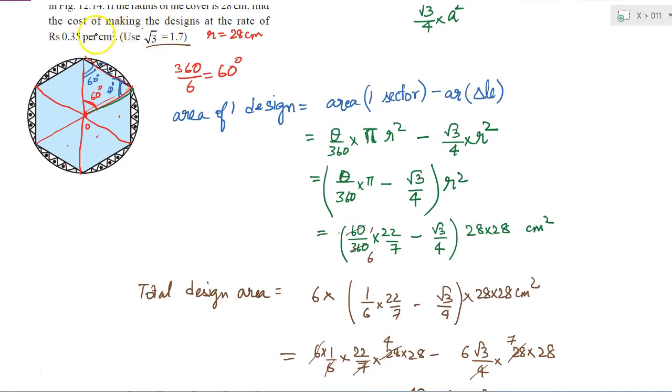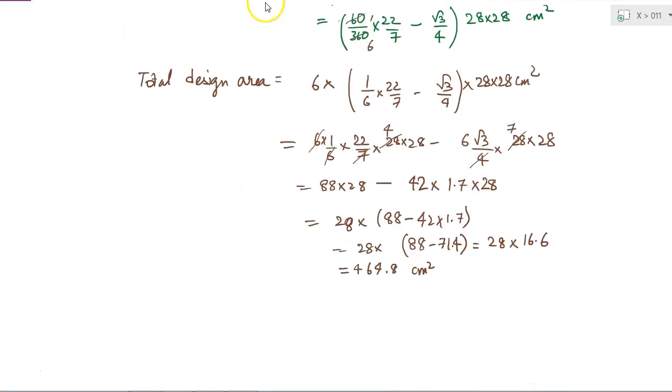But I have to find out total cost. It is given that the rate is 0.35 rupees per centimeter². So my total cost will be 0.35 into 464.8, which will come out as 162.68 rupees. Therefore the total cost is 162.68 rupees or if I round it off I can even tell it as 163 rupees.